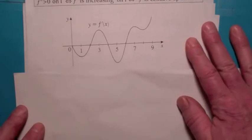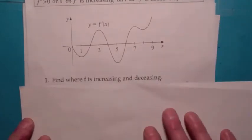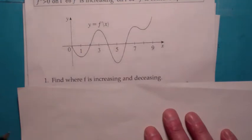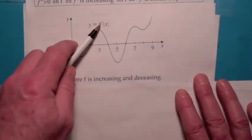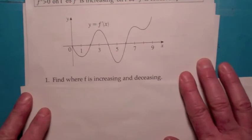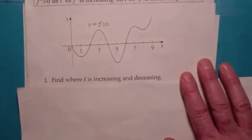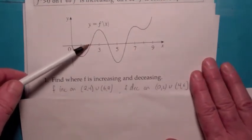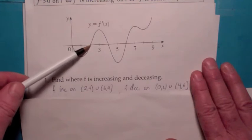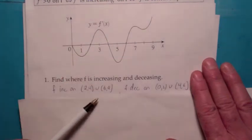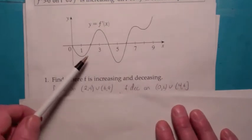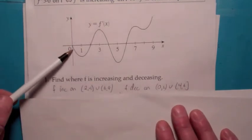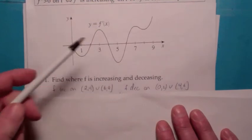Suppose I give you a graph — this is a graph of f prime. If this were on a quiz or test, it's crucial that you recognize which function this is. Where is f increasing and decreasing? f is increasing when f prime is greater than zero, so from two to four and from six to nine. f is decreasing when f prime is less than zero, so from zero to two and from four to six.